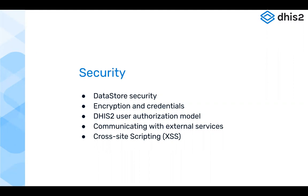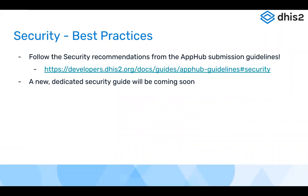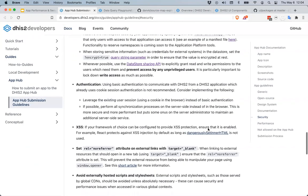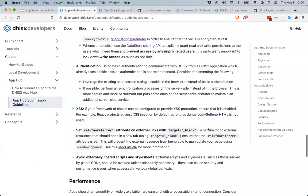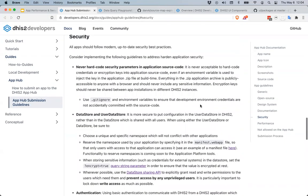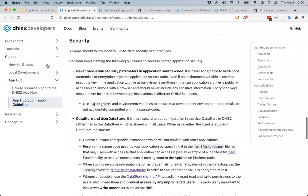We're going to talk about some specific steps you can take to secure certain parts of DHIS2 apps. This is not going to cover everything — there's a lot of additional detail we'll need to get into in the future. For best practices, we will be creating a dedicated security guide soon on the developer portal. For now, there is a good baseline guide available in the App Hub guidelines, which has a security section with concrete recommendations. These are things we will look for when reviewing DHIS2 apps submitted to the App Hub, but they're good guidelines to follow in any case.